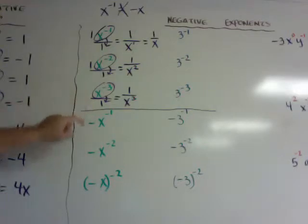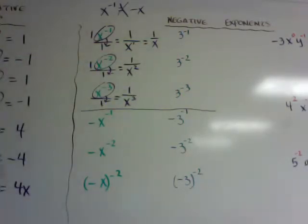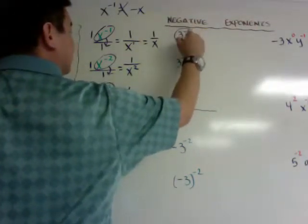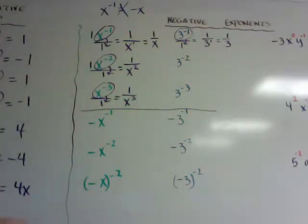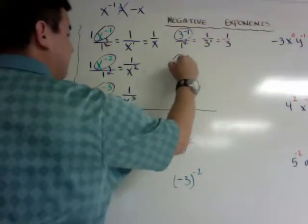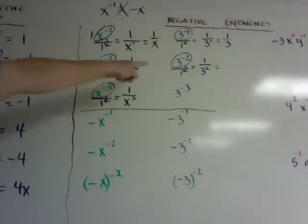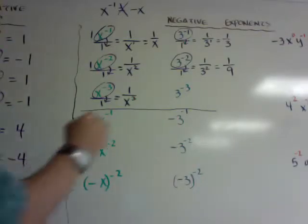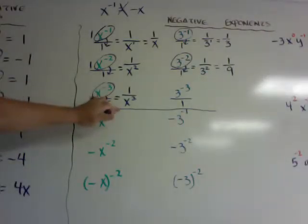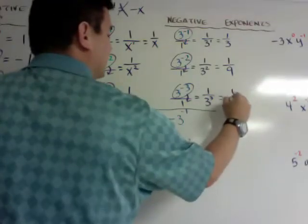And vice versa — if you have a negative exponent on the bottom, when you move it up it becomes positive. Over here I have the same thing but with a number base: 3 to the negative 1. When I put it over 1 and move it down, I get 1 over 3 to the 1, which is just 1/3. When I move 3 to the negative 2 down, it becomes 1 over 3 squared. Since 3 squared is 9, the answer is 1 over 9. And for 3 to the negative 3, it becomes 1 over 27.